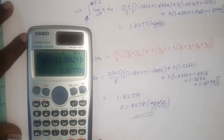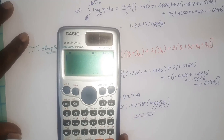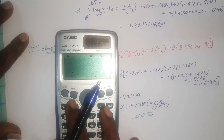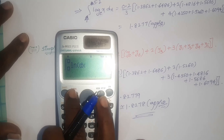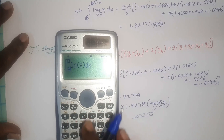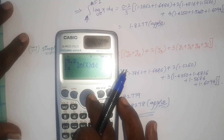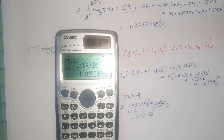You can verify your answer directly using the scientific calculator's integration function. Enter ln(x) as the function, lower limit 4, upper limit 5.2, and you will get 1.8278. So almost exact answers are obtained with Simpson's one-third rule and Simpson's three-eighth rule. This is the application of numerical integration. In the next video I will give some more examples on it. Thank you very much.